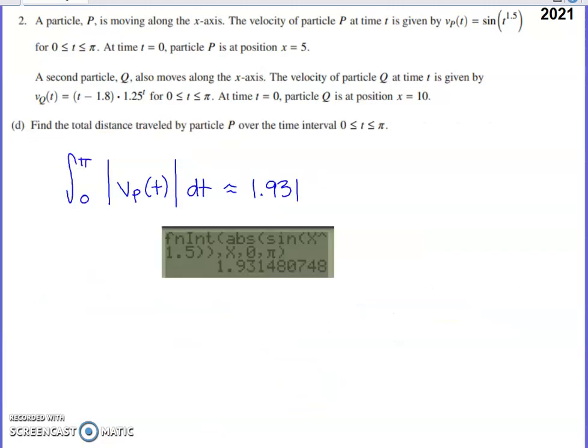And then the last part of this question says to find the total distance traveled by particle P on the interval from zero to pi. One thing you have to make sure you do when you're doing a total distance calculation is you apply your integral to speed and not to velocity. Speed is the absolute value of velocity or the magnitude of velocity. So if I take the absolute value of my velocity function for particle P, that ensures that any of the stretches of time from zero to pi where particle P was potentially traveling to the left don't subtract off when we do our integral.